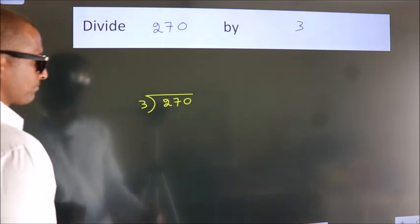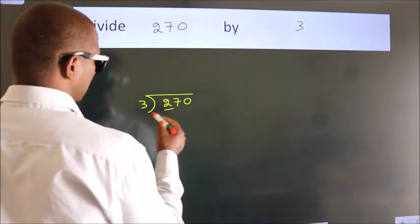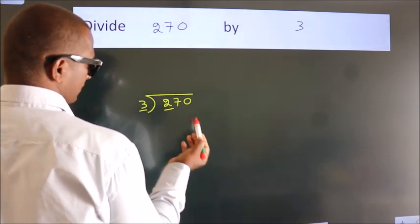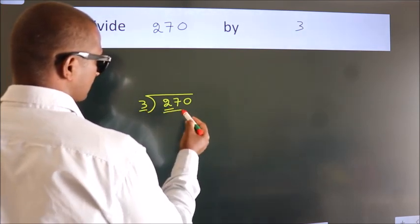Next, here we have 2. Here, 3. 2 smaller than 3. So, we should take 2 numbers. 27.